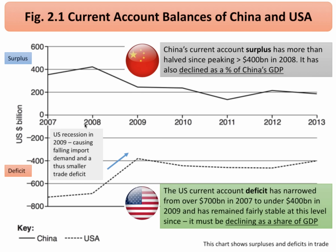You can see that China runs a current account surplus every year, which peaked in 2008 at just over $400 billion but has subsequently fallen, whereas the United States is running a current account deficit which peaked at the start of the period at about $700 billion, fell very sharply in 2009 largely as a result of the recession to just under $400 billion. Since then, the USA has run a current account deficit of around $400 to $450 billion each year up to 2013.